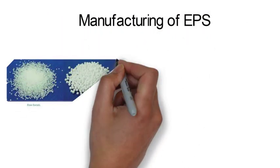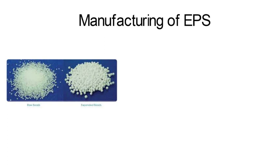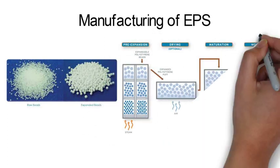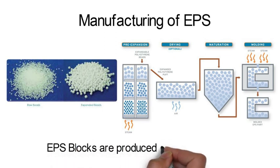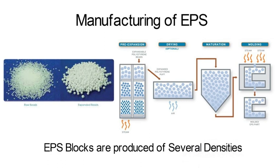Manufacturing of EPS: Raw beads are expanded using steam, creating pre-puff beads which are then cured in large bags before being conveyed to the mold. Once in the mold, the pre-puff beads are again steamed to form a block. The blocks are then placed on the storage floor to age for the appropriate length before being cut into various shapes and sizes. Blocks are produced in several densities to meet specific project needs.